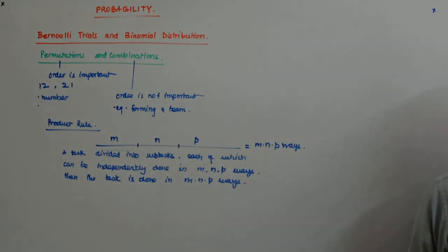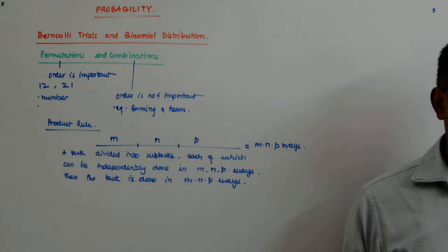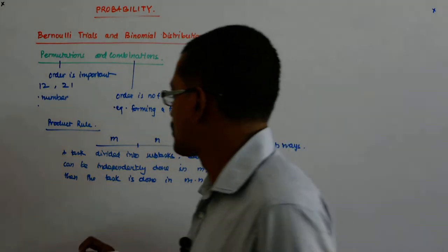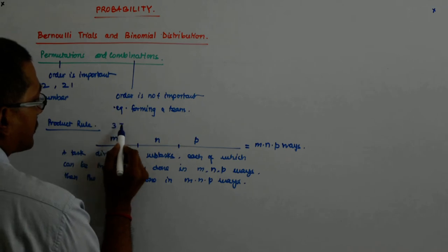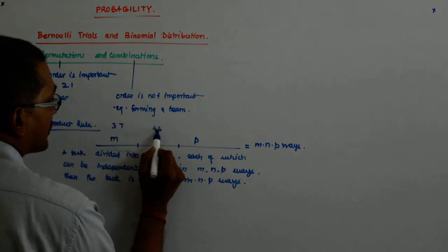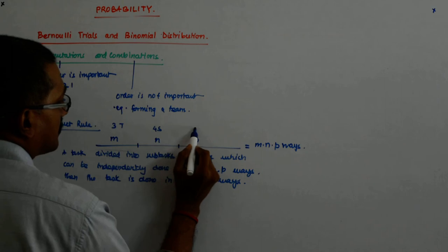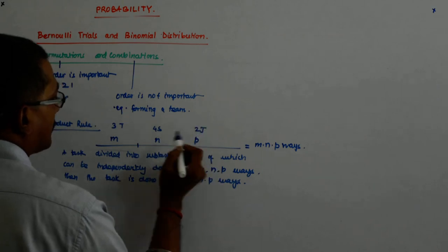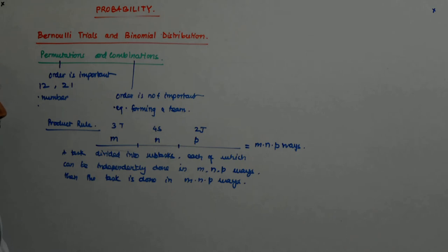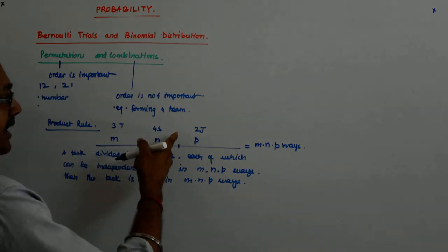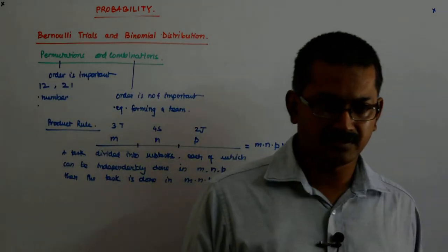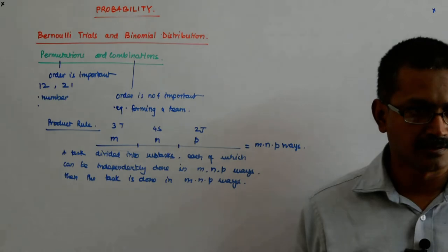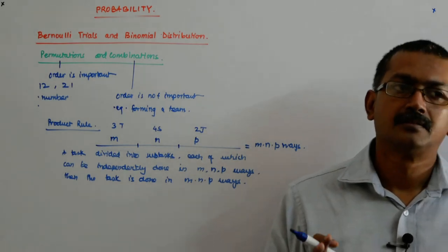This is called the product rule, so it is a series kind of thing. A child getting dressed, he has 3 trousers, 4 shirts, 2 jackets. He can get ready in how many ways? 3 into 4 into 2, 24 ways. And they will be distinguishable, that is permutation.